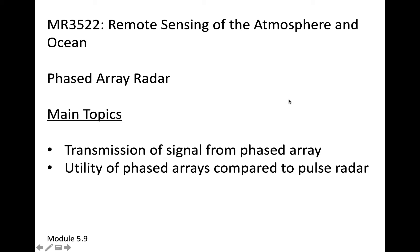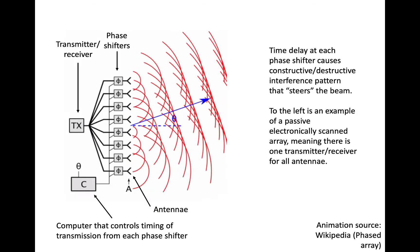This short module discusses phased array radar systems. A phased array consists of several antennas that are controlled by a central computer.